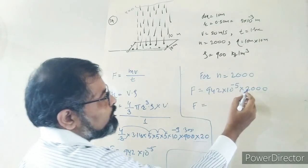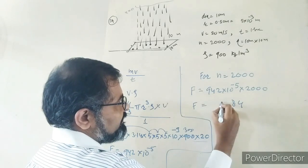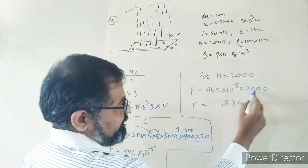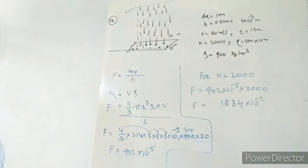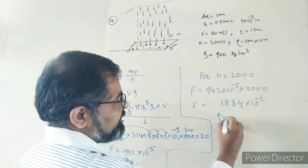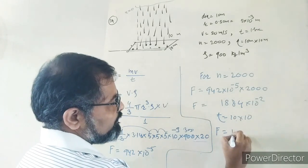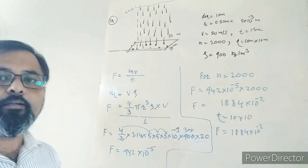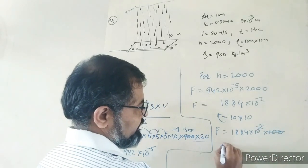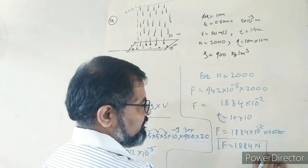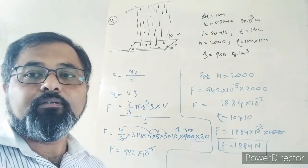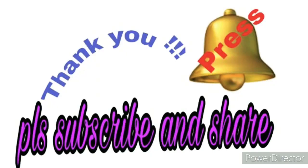For the total force, we multiply by 2000 hailstones. We get 1884 × 10⁻² × 100 × 100 (for the 10 m × 10 m area). So the total force comes out to approximately 900 Newtons, which matches the answer given in the book — 900 Newtons.